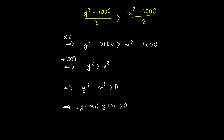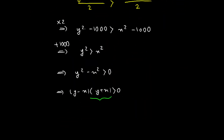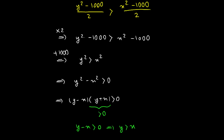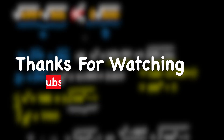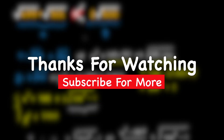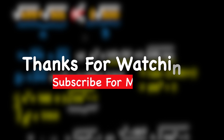Since both y and x are positive quantities, their sum y plus x is positive. For the product to be positive, y minus x must also be positive, so y must be greater than x. This means that two times square root of 500 is larger than square root of 499 plus square root of 501. Thank you for watching — please consider subscribing and smash the like button if you found this video helpful.